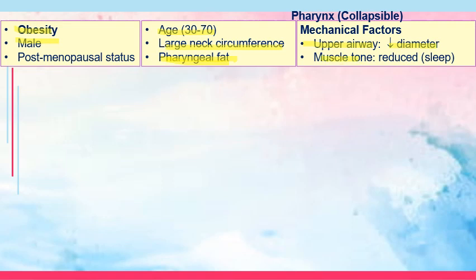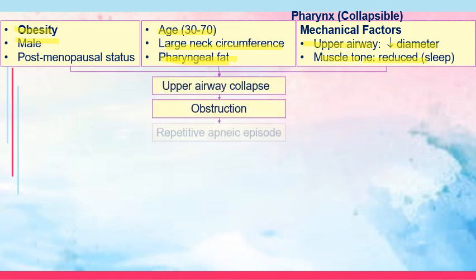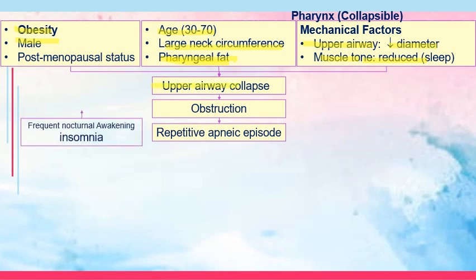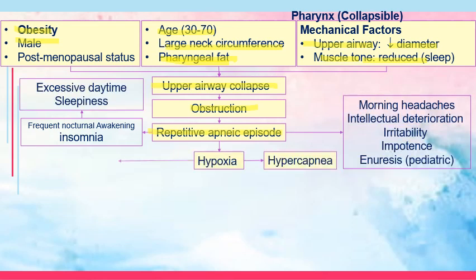The muscle tone also tends to be reduced during sleep, hence there is a possibility for the tongue to fall backwards. With all these conditions and predisposing factors combined, there could be upper airway collapse, and because of this collapse obstruction results. Because of that obstruction, there will be repetitive apneic episodes lasting at least 10 seconds each and at least 5 episodes hourly. The patient would have signs of insomnia, inability to sleep at night, and nocturnal awakening especially during apneic episodes.